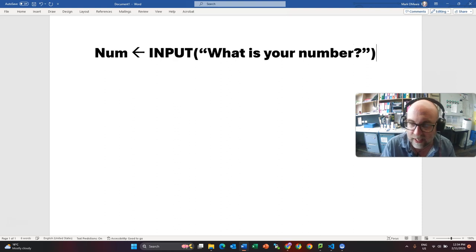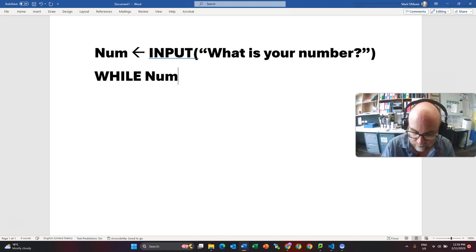So there we have that variable. And you know, I might type in 5 for instance. Well, what I'm going to say is while num is less than 20 and then end while.